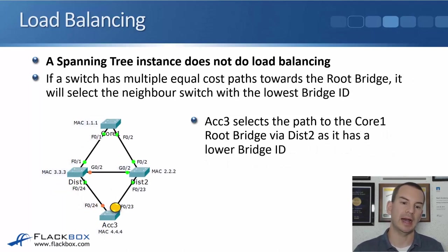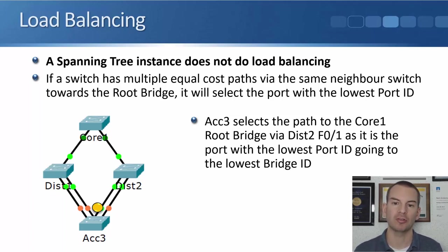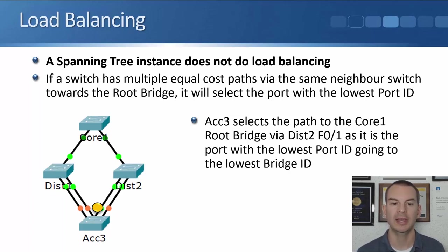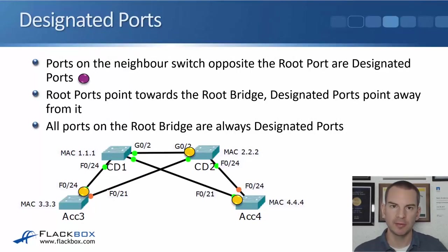Another load balancing example: if a switch has multiple equal cost paths via the same neighbor switch toward the root bridge, it will only select one path — the port with the lowest port ID. In this example, Access 3 has four uplinks toward root bridge Core 1: two going toward Distribution 1 and two toward Distribution 2. Only one will be selected — Access 3 selects Fast 0/1, the port with the lowest port ID going to the switch with the lowest bridge ID.